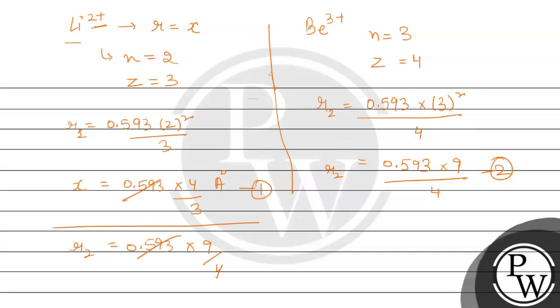divided by 0.593, and x over r2 equals 4 by 3. This will go above, giving us 4 over 9, which is 16 divided by 27.